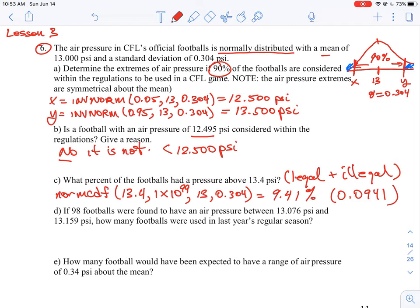And then it says here for D, if 98 footballs were found to have an air pressure between 13.076 and 13.159, how many footballs were used in last year's regular season? So again, we need the norm CDF function, because this will let us calculate the probability between those two ranges, so we just need to put those values in, 13.076, 13.159. We have our mean and deviation, that is 0.304.